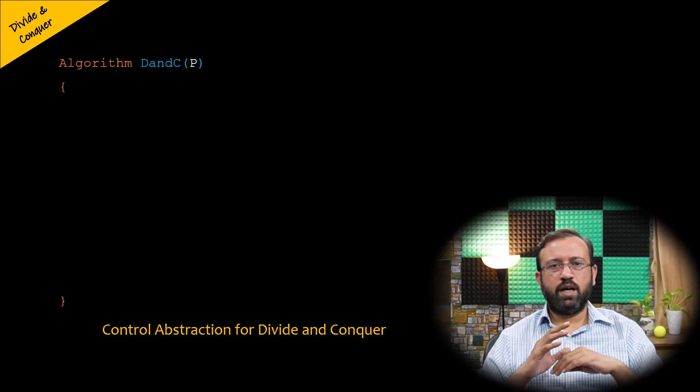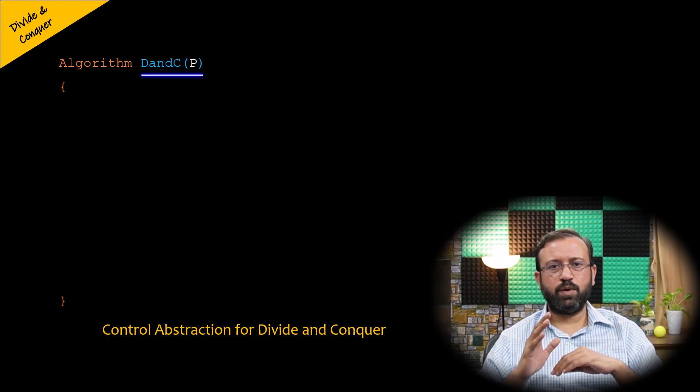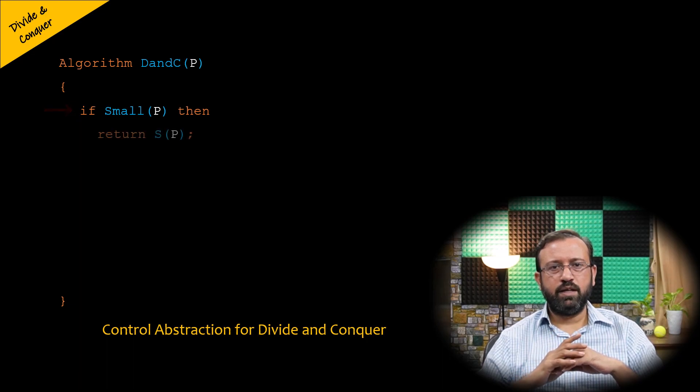Let us call this algorithm D and C for divide and conquer. This algorithm takes P as the problem. Then within the algorithm, if the problem P is small, then return the solution of the small problem P.